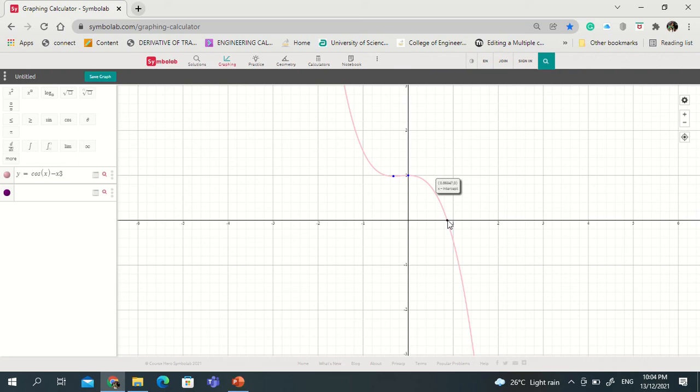All right, so now we can answer the question, how many roots? So from here we can say that there's only one root. And now the second question is what are the intervals? So since we have only one root, we can only say that there's only one interval.